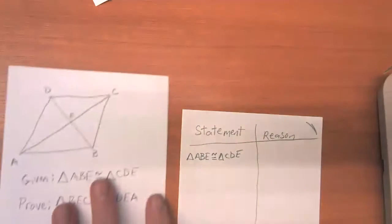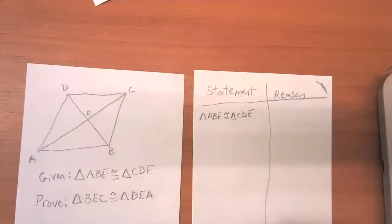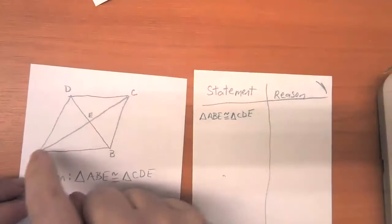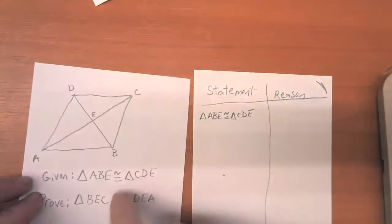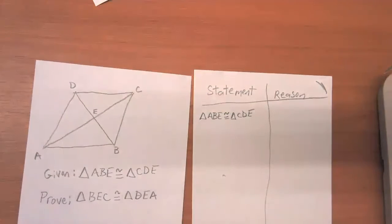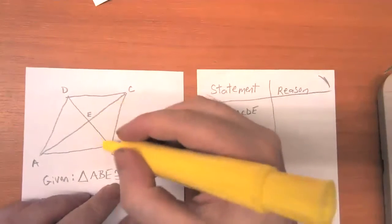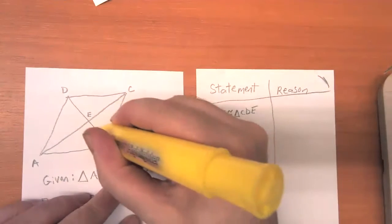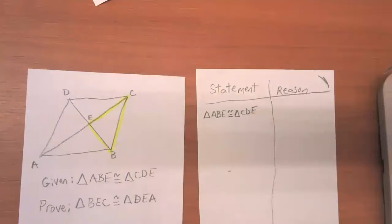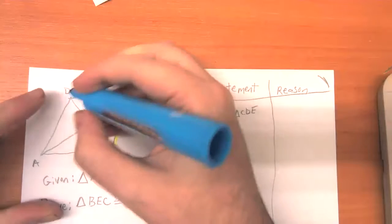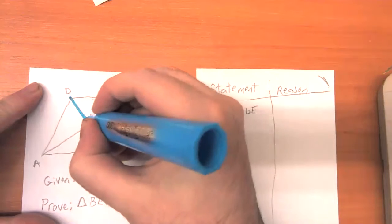Here is a diagram. We are given — which is kind of an unusual thing — that triangle ABE is congruent to triangle CDE. So they say right off the bat that we know that two triangles are congruent. And what we need to do is prove that triangle BEC is congruent to triangle DEA.